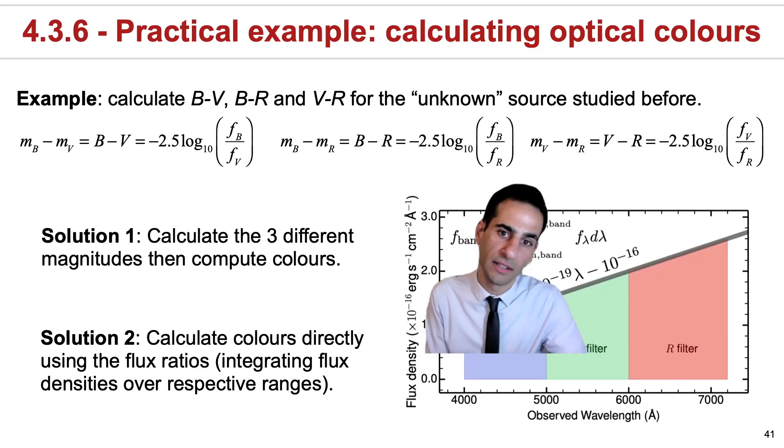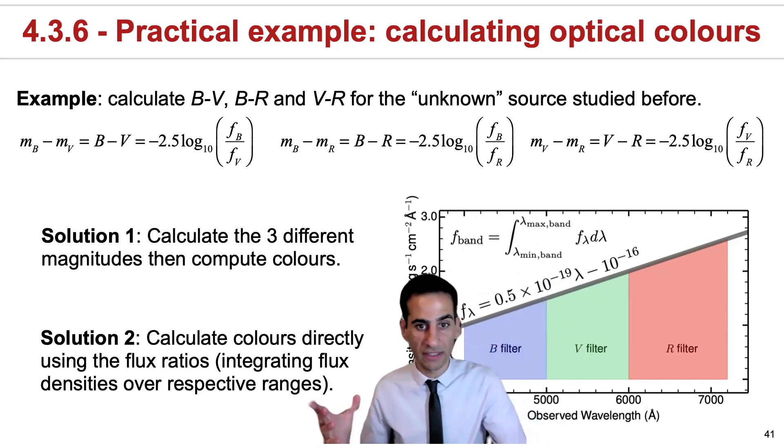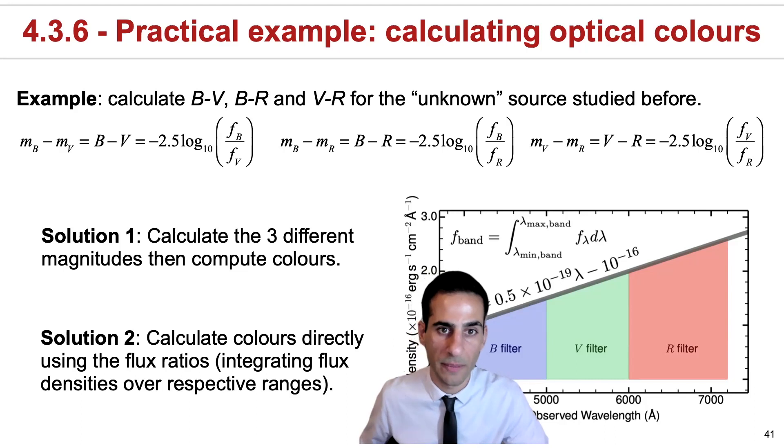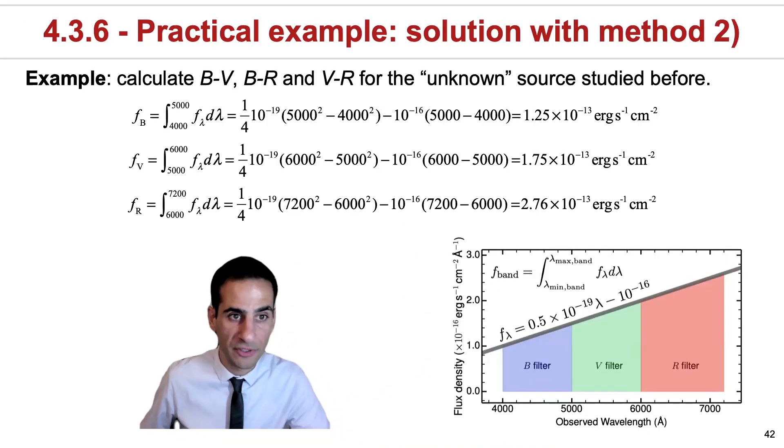That's one way you can do this. You can calculate the different magnitudes and then calculate colors, or you can calculate colors directly by looking at the ratios of fluxes. Depending on what you're trying to do, you can do either. Specifically for this case,